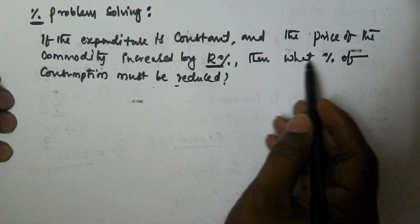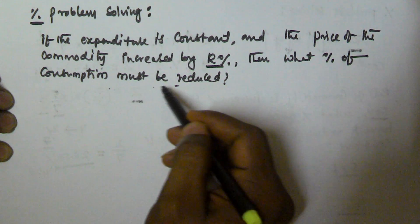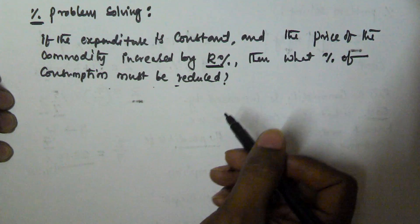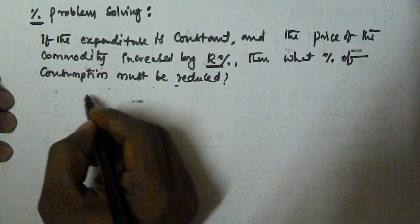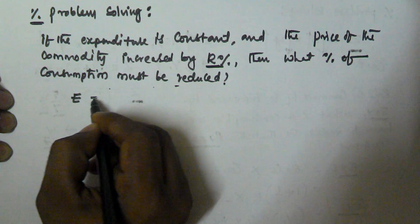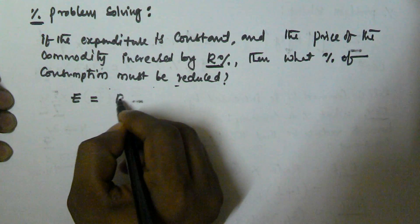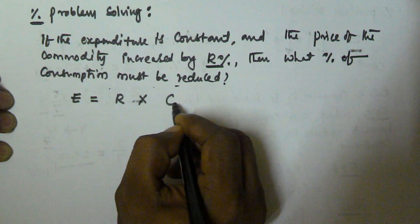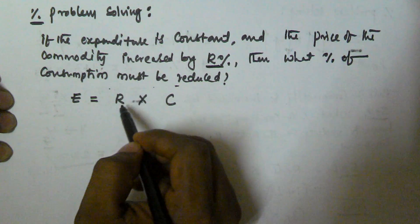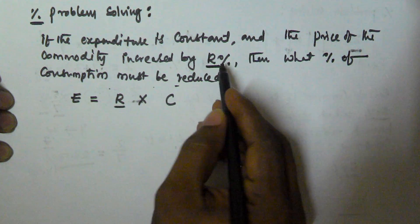So to find the reduced percentage of consumption, according to the formula, expenditure is equal to rate into consumption. But according to the given problem, the rate is increased by R percentage.